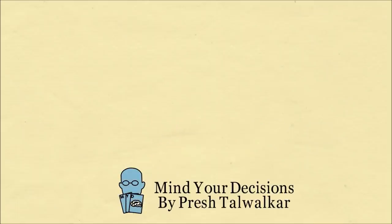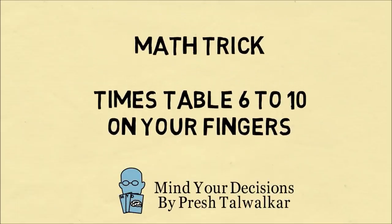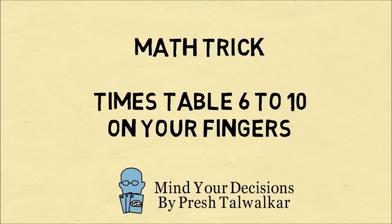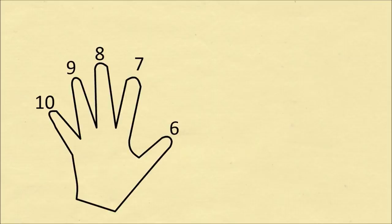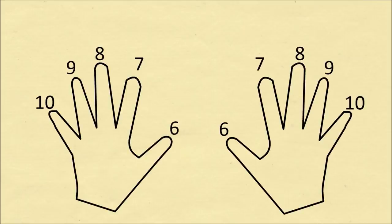Hi, this is Presh Talker. In this video I'll teach you how you can do the times table from 6 through 10 on your fingers. You can follow along with me — place your two hands in front of you and imagine numbering your fingers 6 through 10 going from your thumb to your pinky finger.